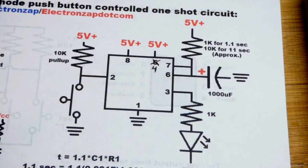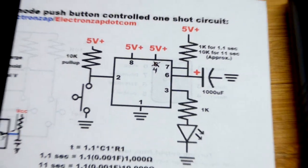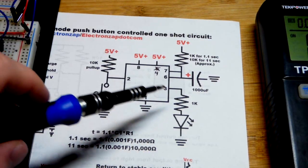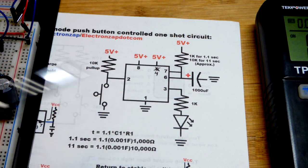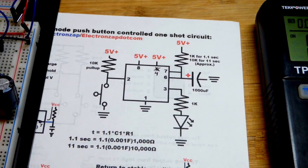In any case, once it gets to two-thirds of the supply voltage, then the 555 timer is actually going to discharge the capacitor, but also set the output low. The LED will turn off.